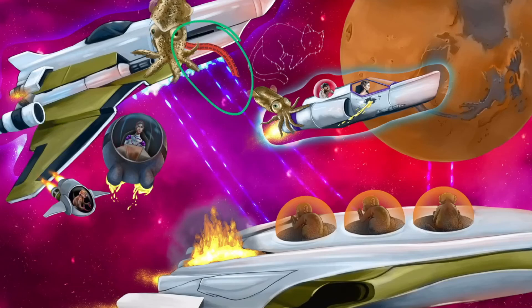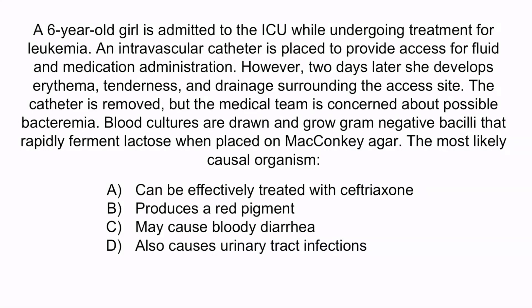The red tube helps you remember Enterobacter is associated with intravascular catheter infections. The fast-flying monkey helps you remember it's a fast lactose fermenter. And the girl with the yellow jet fuel reminds you it also causes urinary tract infections. A is incorrect because ceftriaxone is a third-generation cephalosporin, and Enterobacter is notorious for being resistant to it — Enterobacter is treated with second-generation cephalosporins. B is incorrect because Serratia produces a red pigment but is a slow lactose fermenter and more commonly associated with UTIs, not intravascular catheter infections. C is incorrect because enteric organisms such as Shigella or E. coli may cause bloody diarrhea, but are not typically associated with intravascular catheter infections, and Enterobacter is not known to cause bloody diarrhea. So again, the correct answer is D. We've now covered everything you need to know about Enterobacter, Citrobacter, and Serratia marcescens.